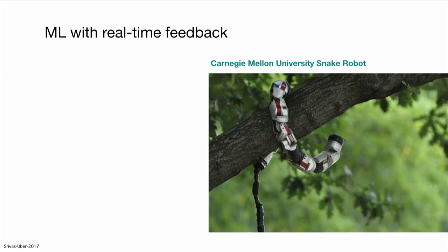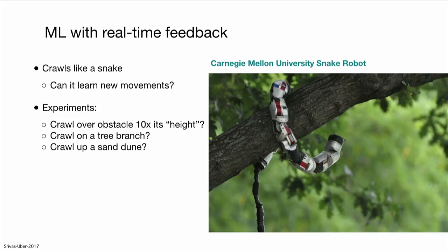Machine learning with feedback — with real-time feedback — is a whole different thing. I'll give you an example of this Carnegie Mellon Snake robot that they built. It crawls like a snake. But their challenge was, can it learn new movements? The experiments they performed were: can it crawl over an obstacle ten times its height, or crawl on a tree branch, or crawl up a sand dune?